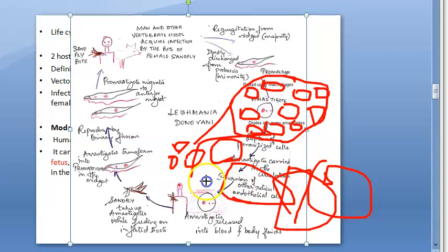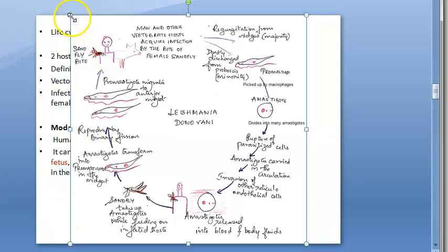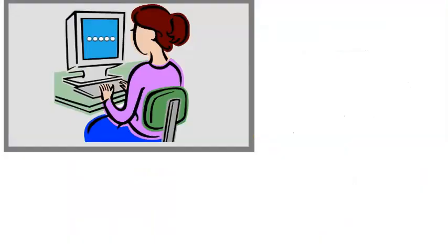When the next uninfected sandfly bites this infected man, it picks up the amastigotes, which convert into promastigotes in the sandfly — completing the life cycle of Leishmania donovani.